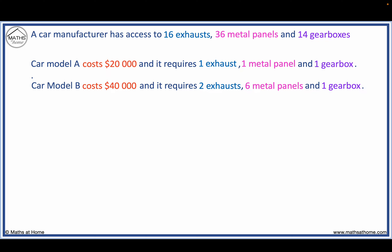Car model B costs $40,000 and it requires two exhausts, six metal panels and one gearbox.